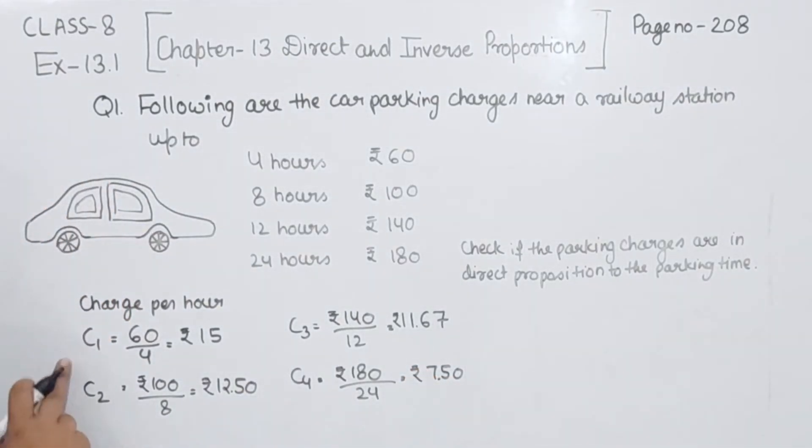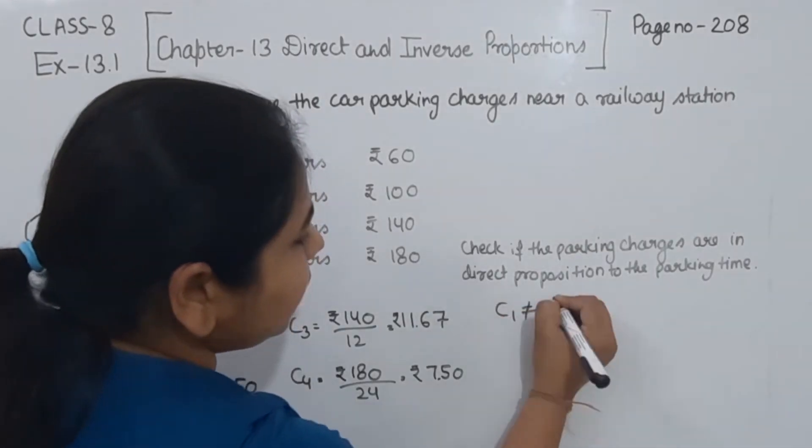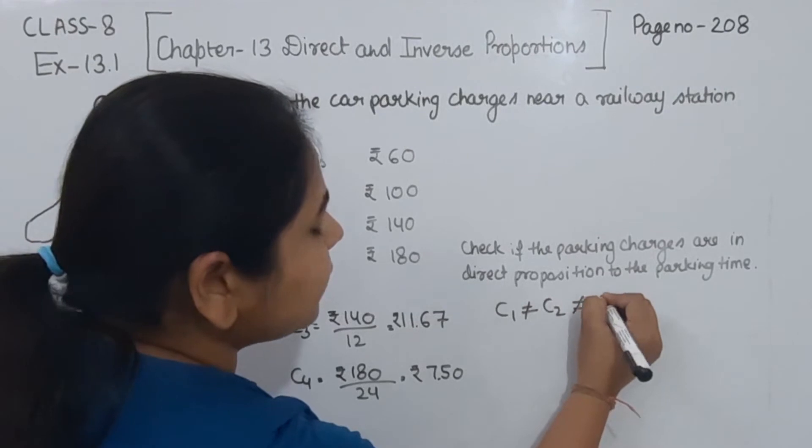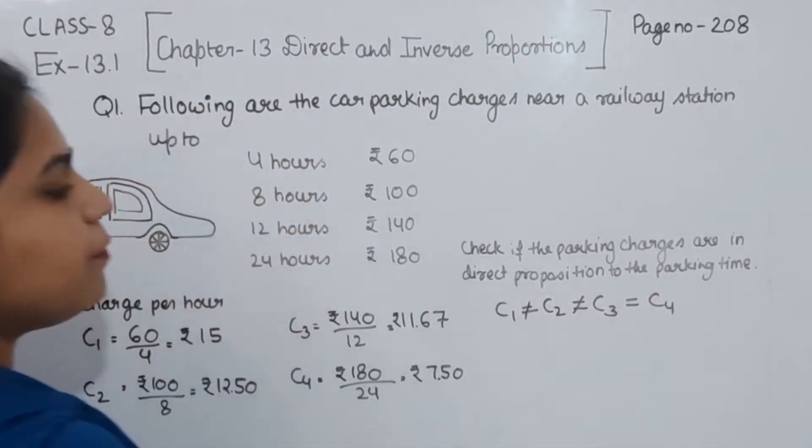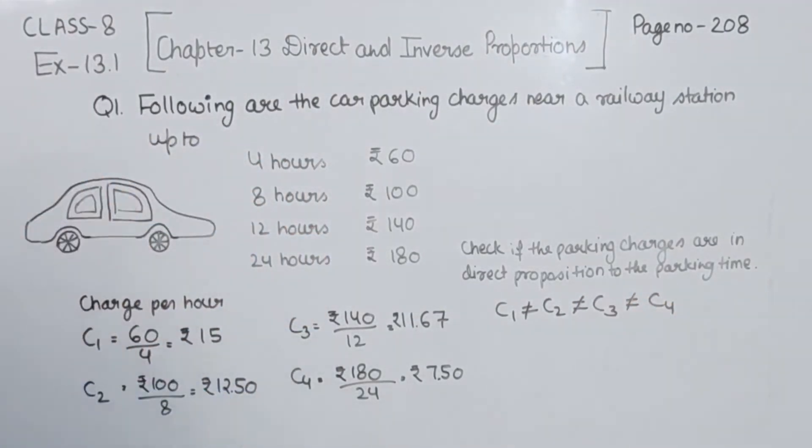Now from these four, we have concluded that the charges per hour are not same. So I am going to write here C1 is not equal to C2, not equal to C3, and not equal to C4. Four of them, the hourly charges of the given four combinations are not equal.